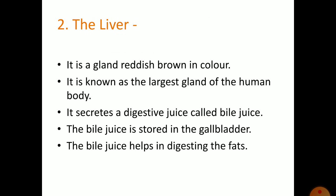The second type of digestive gland is the liver. It is a gland which is reddish-brown in color and is known as the largest gland of the human body. It secretes a digestive juice called bile juice. The bile juice is stored in the gallbladder and helps in digesting fats.